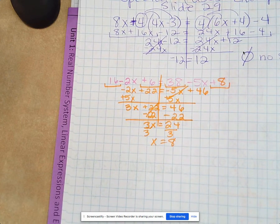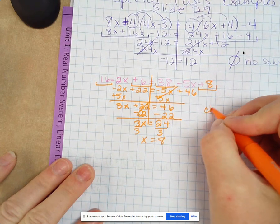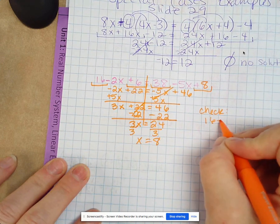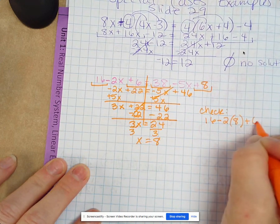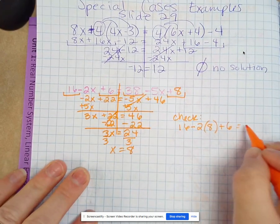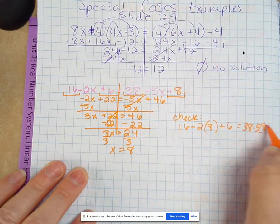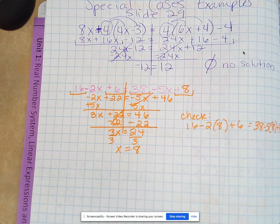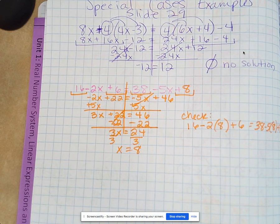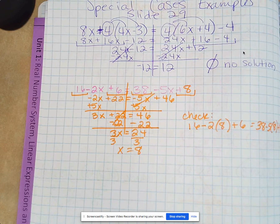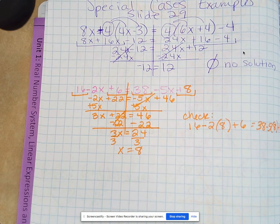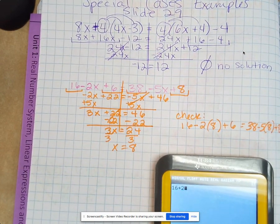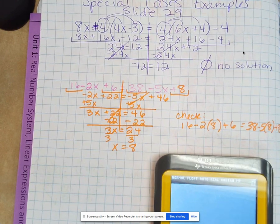And then we should be checking these in the calculator by plugging them back in. So if you didn't do that, you need to do that. 16 minus 2 times 8 plus 6 equals 38 minus 5 times 8 plus 8. Let's get the calculator working here.